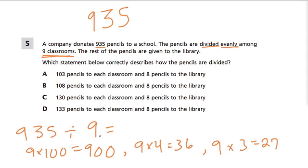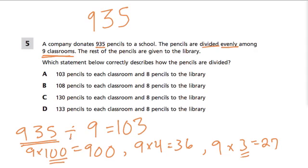So that means nine goes into 935 a full 100 times and three more. This means that the 935 pencils, if divided into nine classrooms, each classroom will get 103 pencils.